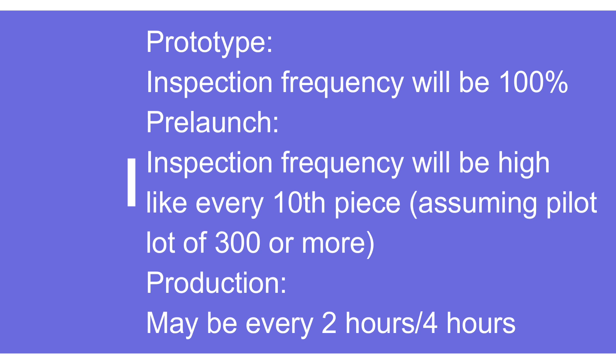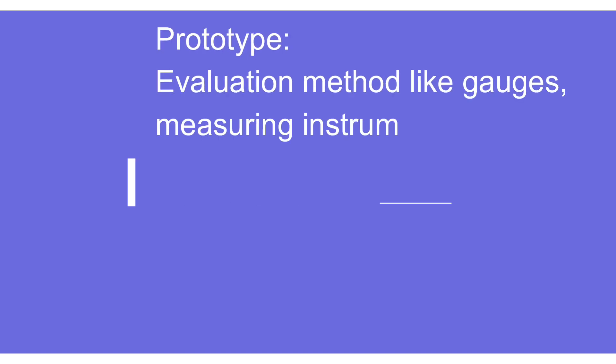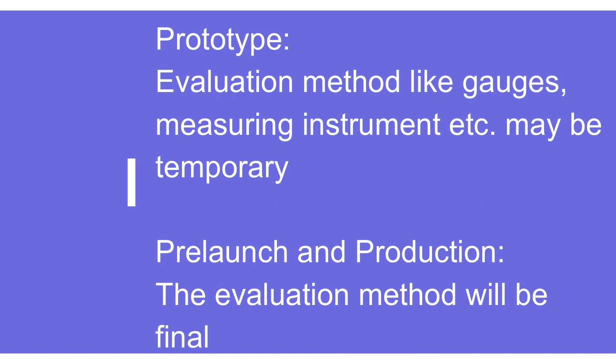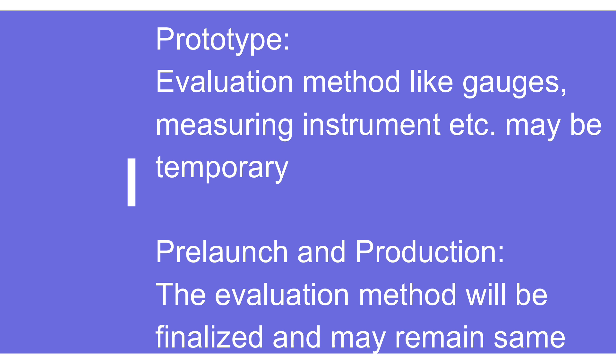Generally the inspection frequency in mass production is after every 2 hours or 4 hours depending on criticality. In the prototype control plan, the evaluation method — like the use of gauges and measuring instruments — is temporary because we don't know exactly what the final output will be. But in the pre-launch control plan, the evaluation method is generally fixed, though there is a possibility of some change during trial production, which can then reflect in the production control plan.